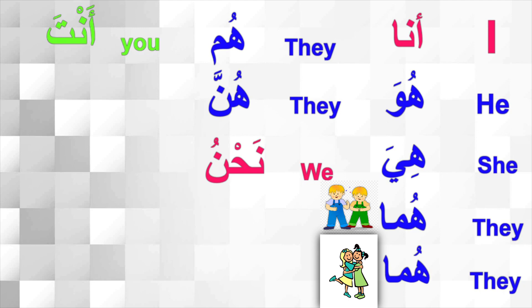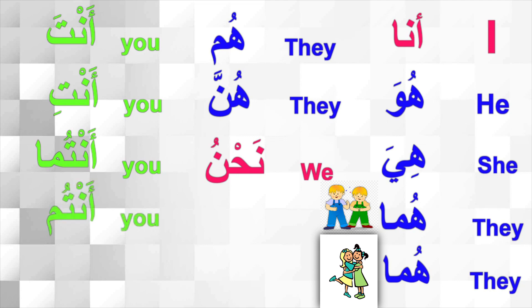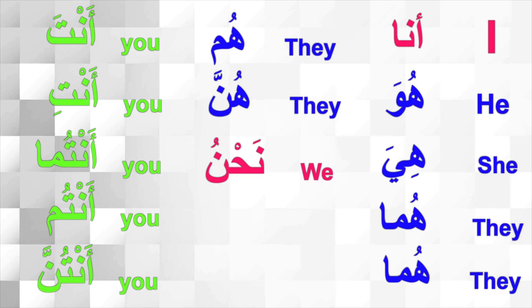We have: one boy — أنت (You); one girl — أنت (You); Antuma — two boys (You); Antuma — also two girls (You); Antum — a group of boys (You); Antunna — a group of girls (You). Let's take some examples in order to understand these pronouns.